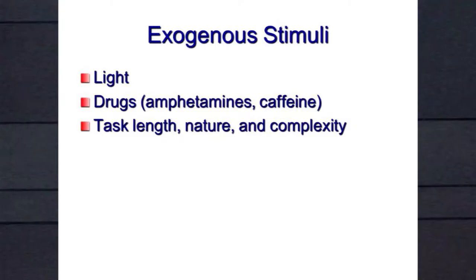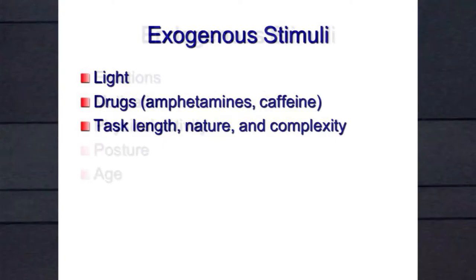Exogenous stimuli include light — the brighter the light, the less likely you are to fall asleep, which is why we turn lights off and use blackout curtains. There are drugs like caffeine, a central nervous system stimulant that keeps us awake. The task at hand also matters — a complex task demanding attention keeps you awake, while something monotonous and repetitive is most likely to put you to sleep.